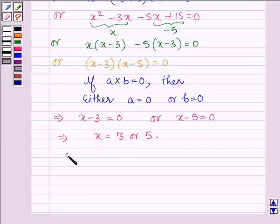So this is the first number. The other number will be 8 - 3, which is 5, or 8 - 5, which is 3.